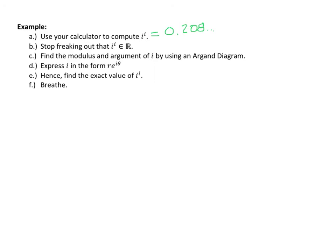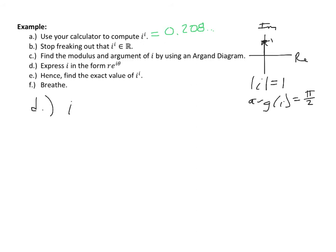Step C: I want us to find the modulus and argument of i using an Argand diagram. If this is the real axis and this is the imaginary axis, then i is right here, just up 1. So the modulus of i is 1, and the argument of i is pi over 2. That means for step D, I can express i as 1·e to the i·pi/2, which is just e to the i·pi/2. And if you don't believe me, punch e to the i·pi/2 into your calculator — sure enough, it comes back and tells us that's i.